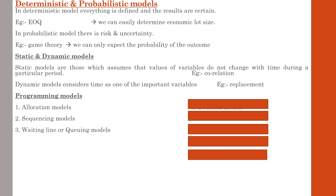The next is the waiting line or queuing model. These models are used to maintain a queue among consumers or whenever there is a crowd. Queuing theory is used to minimize the cost of servicing and waiting.